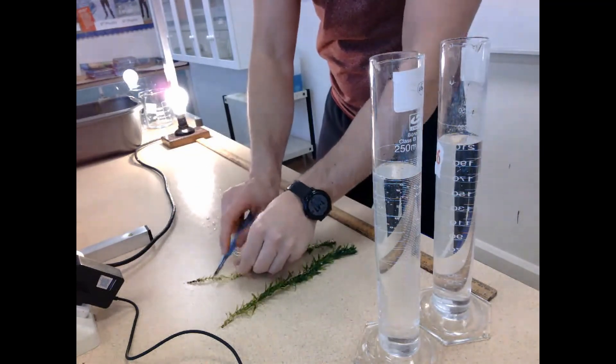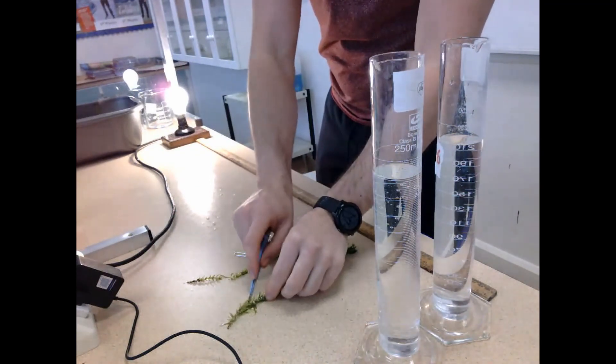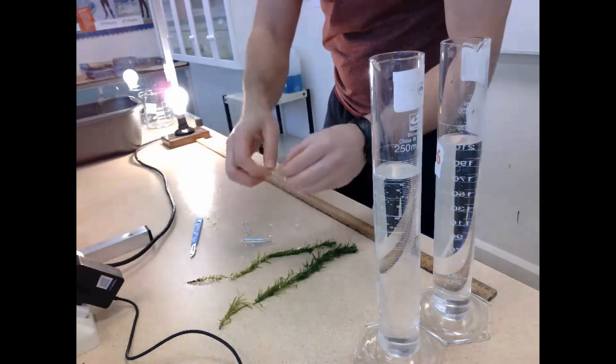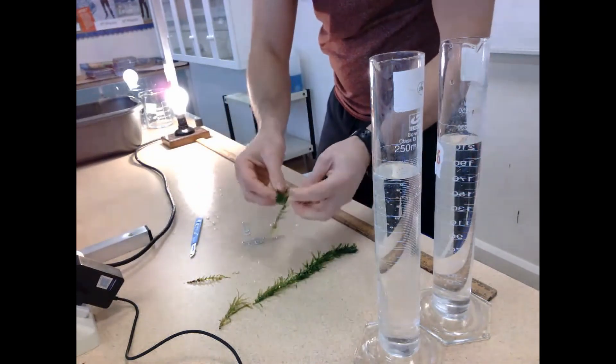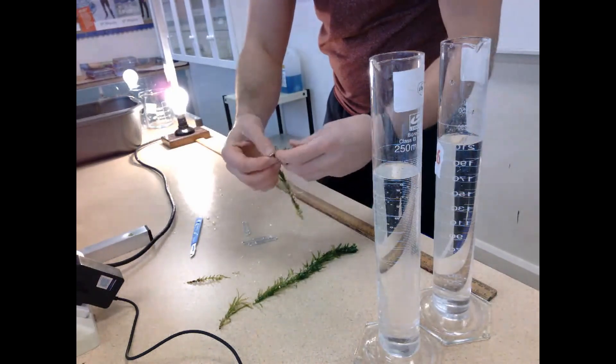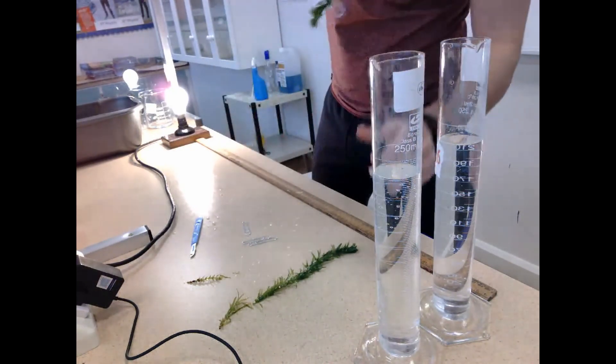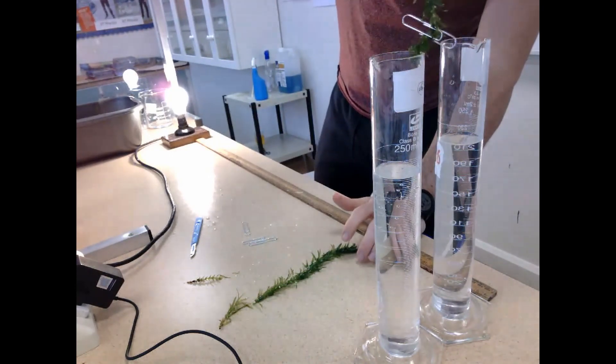I also take a paper clip and add it to the bottom of the elodea because this is going to weigh it down and keep it below the level of the water throughout the experiment. And this is really important again because the whole point here is we need to be able to see the bubbles being produced to track the rate of photosynthesis itself.